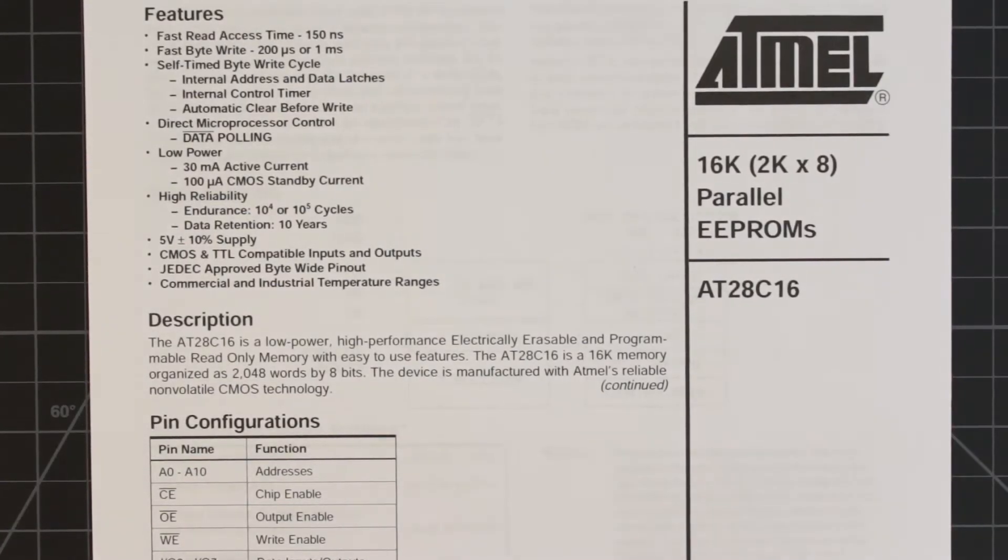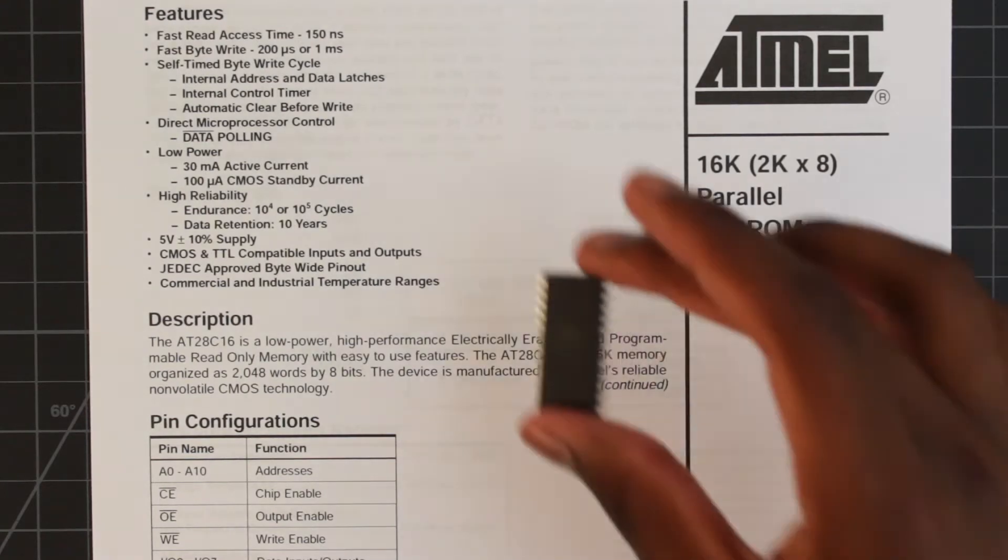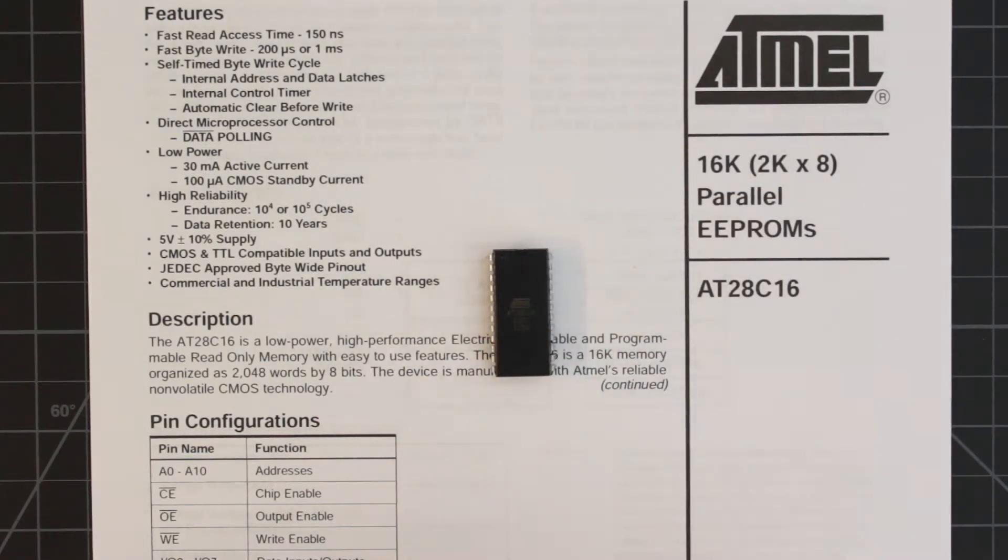I mentioned in the last video that we're going to use an EEPROM to convert binary numbers to decimal for a seven-segment display.